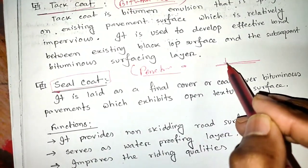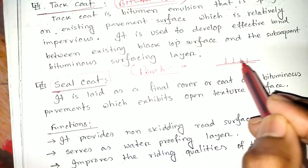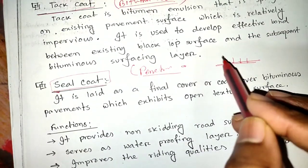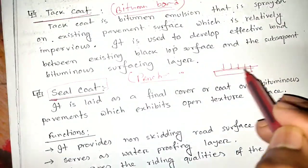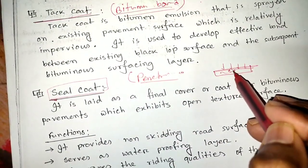So premix is when bitumen is mixed with aggregate, while penetration bound is when bitumen is applied to the surface.